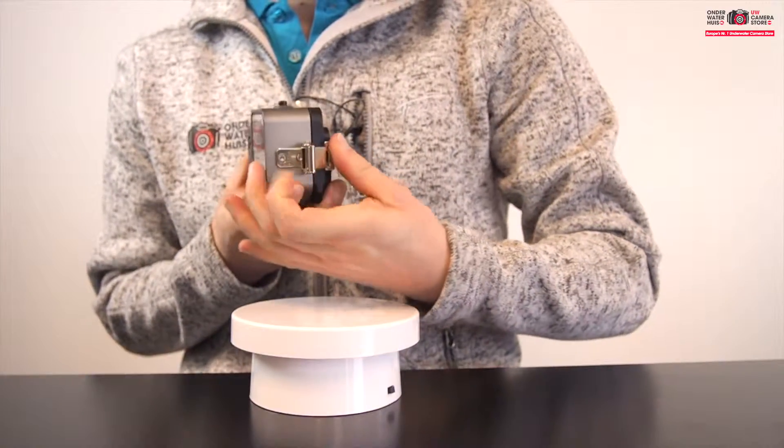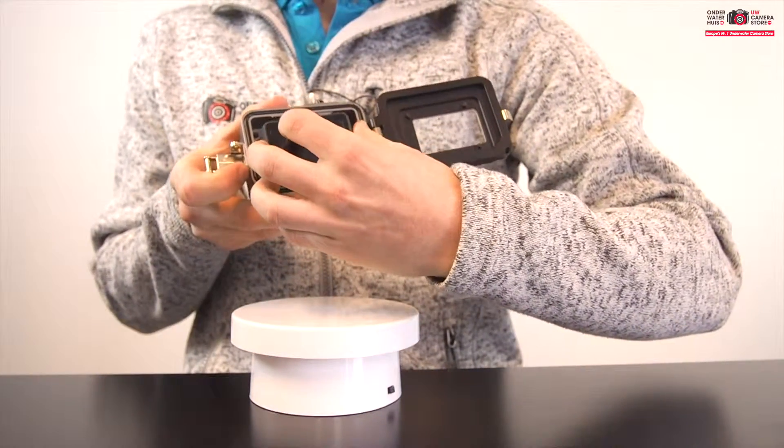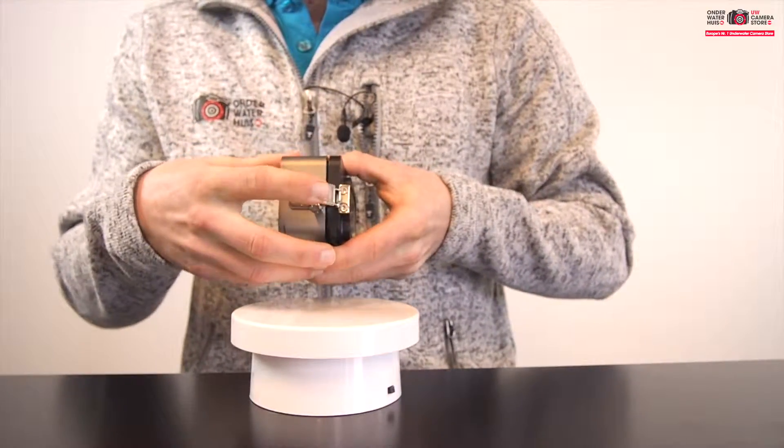You can open the housing by pulling the stainless locking lid snap. There is only one way to put the GoPro in the housing, which makes it very easy. You need to push the lid snap to close the housing back.